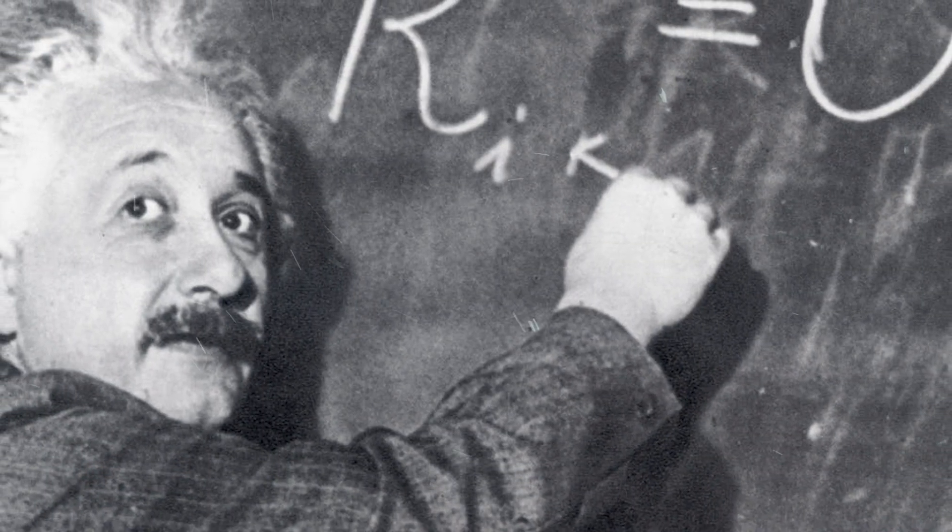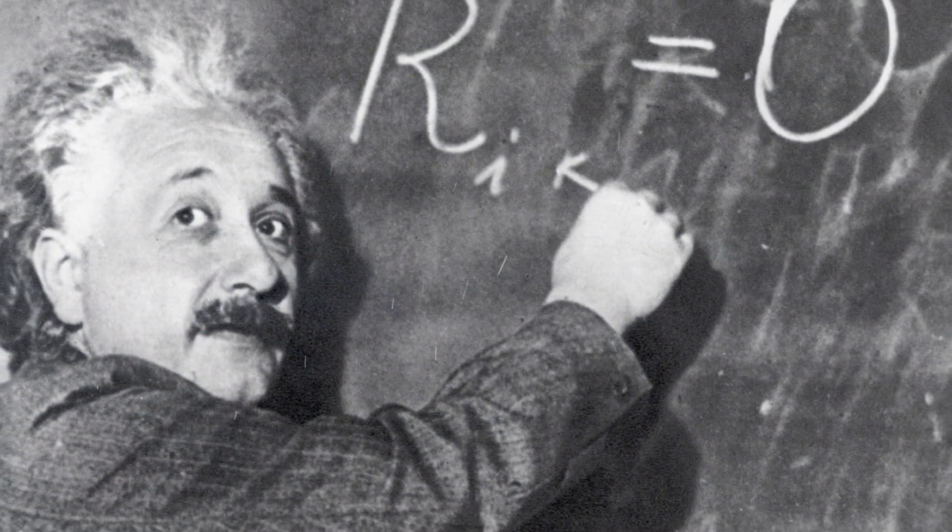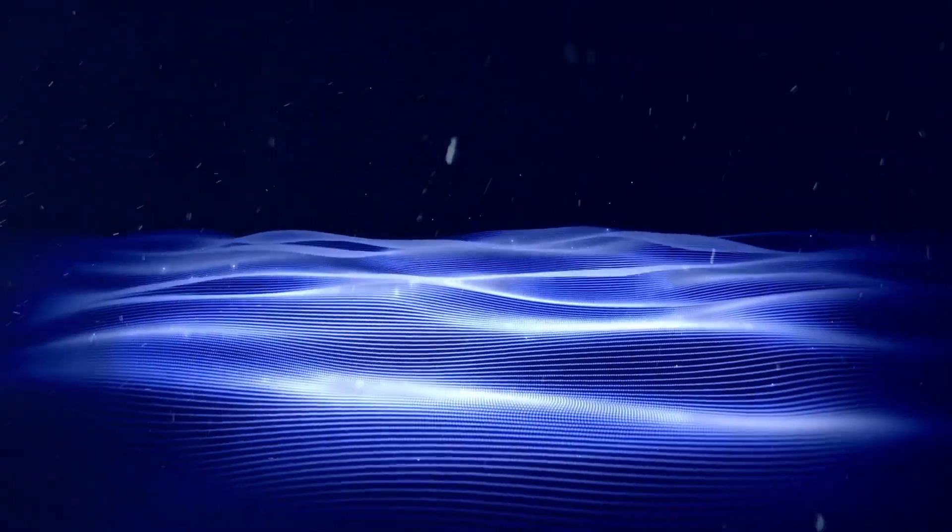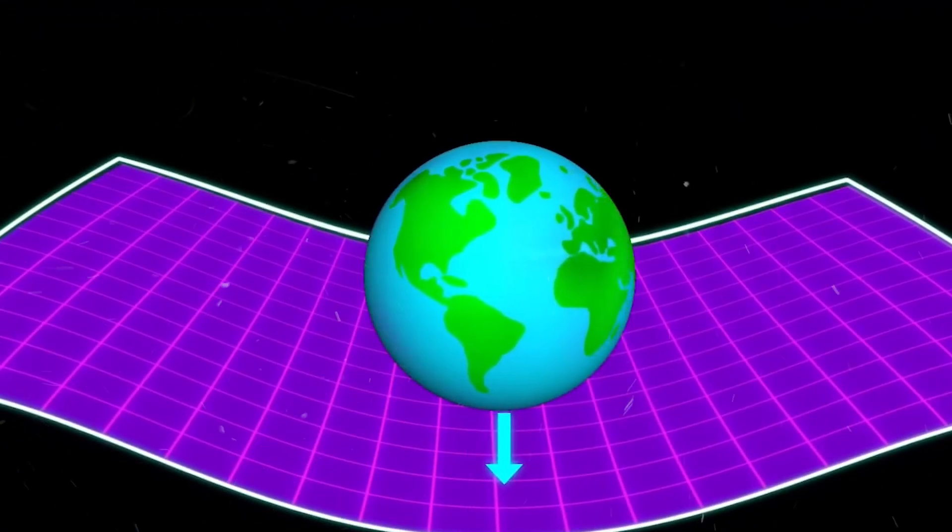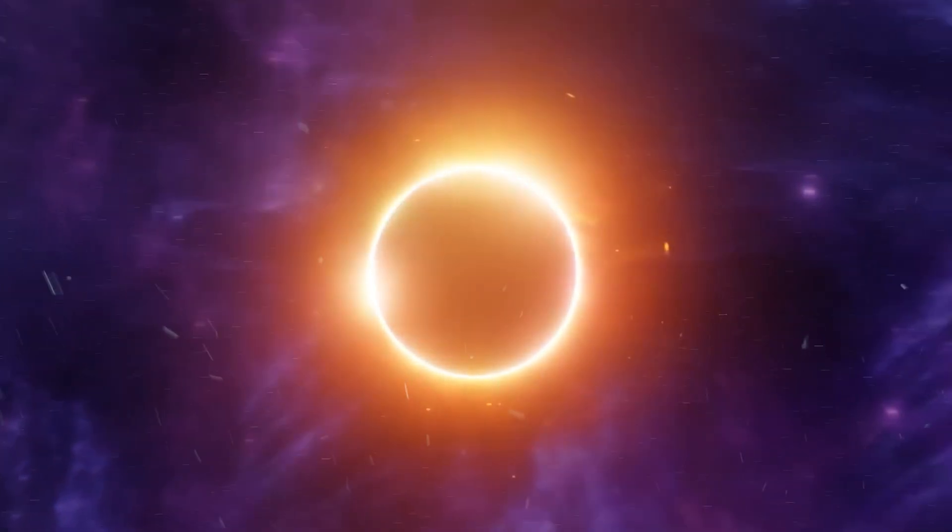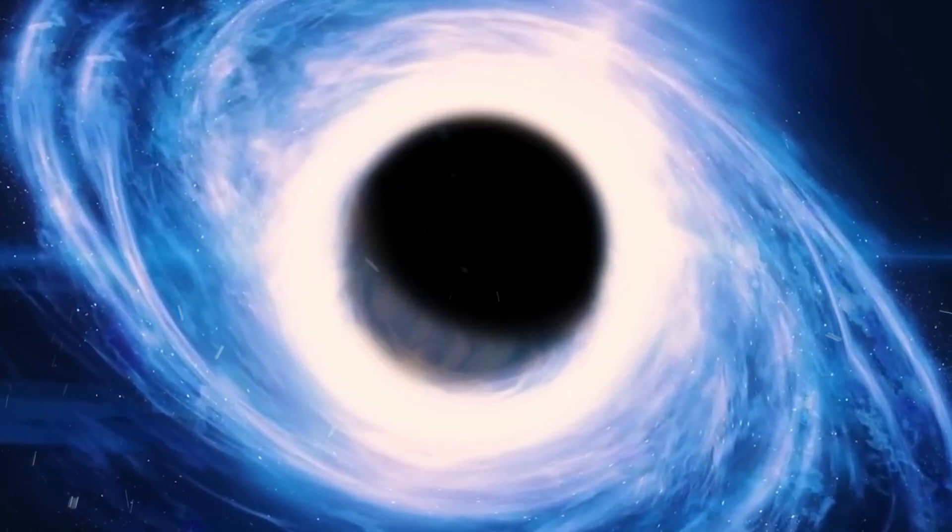In Einstein's theory of gravity, he explains how objects with mass cause space to bend around them. One key concept from this theory is the Schwarzschild radius, which tells us the size of a black hole without rotation or electric charge based on its mass, or the distance from its center to its outer edge, known as the event horizon.